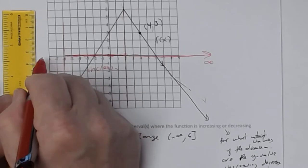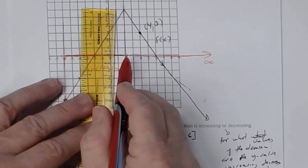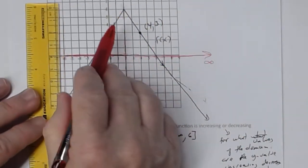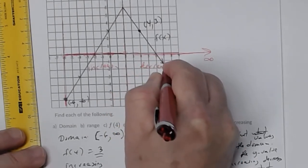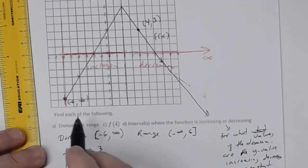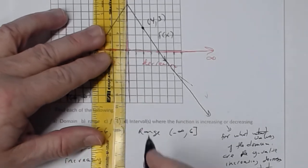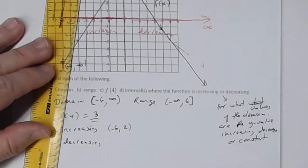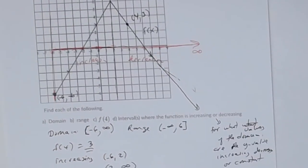Don't say negative infinity because this is where the graph starts. From x equal negative six to x equal two, the function is increasing. From two to infinity, the function is decreasing. So increasing: open interval negative six to two; decreasing: open interval two to infinity. That was number 35.